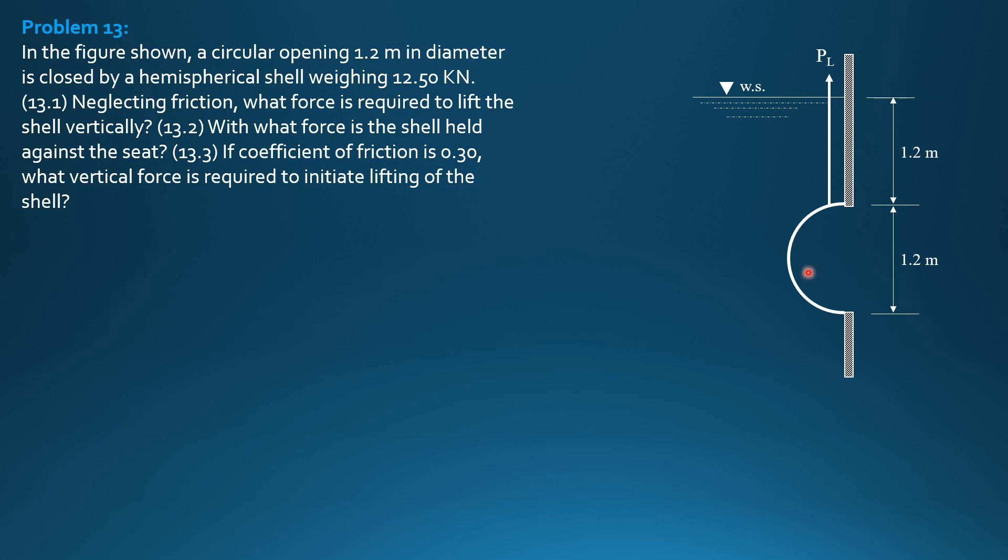So, this is the figure. Let's apply the weight and the buoyant force. Weight is 12.5, and we have buoyant force - specific weight of water times volume of hemisphere, which is 2 thirds pi r cubed, where radius is 0.6. So, summation forces y equals 0. P sub L, the required force,